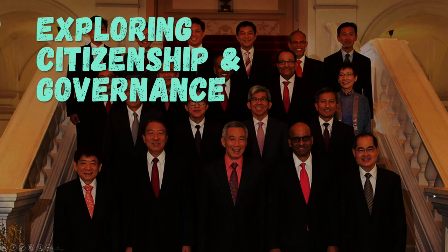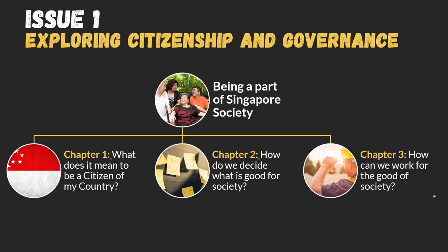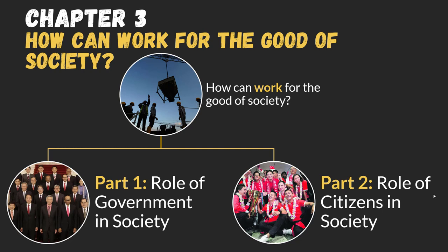Hello everyone, today we're going to explore Citizenship Education, which is part of Chapter 3, and we're going to explore the role of government in Singapore. This is Mr. Goh. In Issue 1, we are looking at three chapters — Chapters 1, 2, and 3 — exploring how we can work for the good of Singapore. The first part covers how the government can help Singapore, and the next part covers the role of citizens in society, because government is part of society and citizens have a role to play as well.